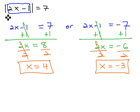Notice again, because there was an absolute value in the problem, we ended up with two solutions: 4 and negative 3.